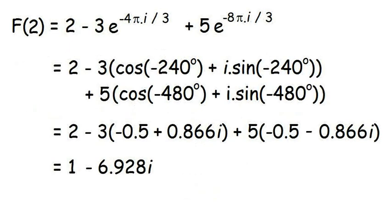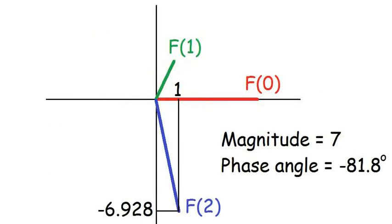And here is the final result of the calculation. The real component comes out as 1, again, but the imaginary component is now minus 6.928. And here you see F2 added to the argand diagram, along with the other two components. This lets you see the relationship between them. The magnitude of that line, its length, comes out as 7, and the phase angle is minus 81.8 degrees.